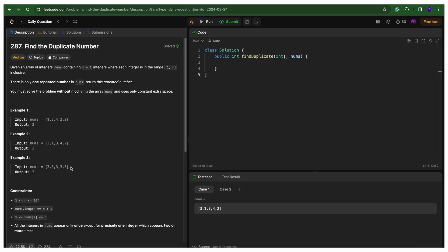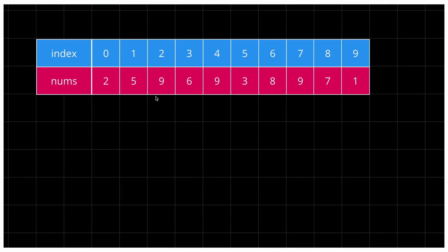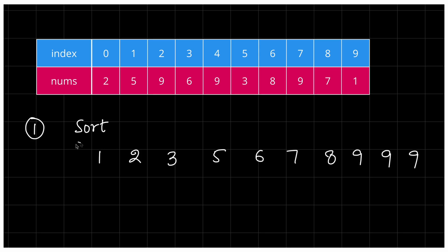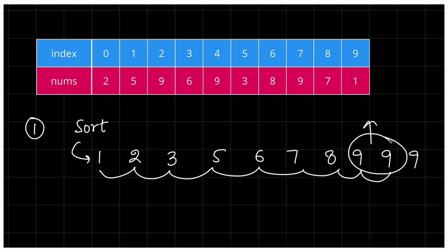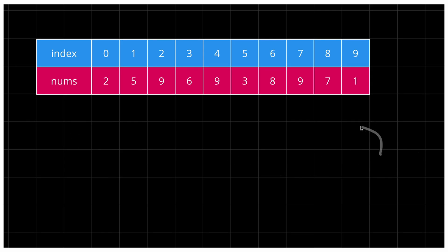Let's see how we can solve it. The first approach is using sort. We can sort this array and then simply run a loop to check if two adjacent elements are equal — that would be our answer. When we sort, similar elements come together, so unequal pairs appear until the duplicate pair is found. However, we cannot make changes to the original array itself, so this approach is not valid. The time complexity for this would be O(n log n).